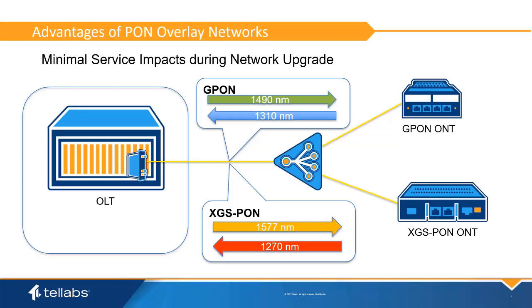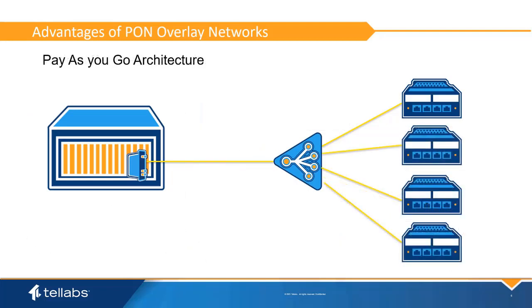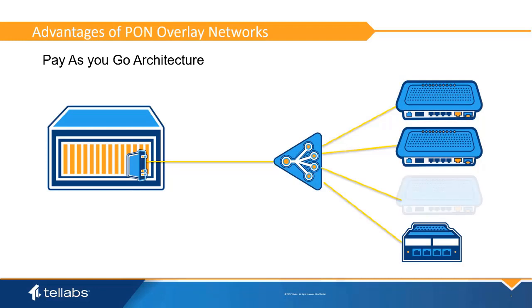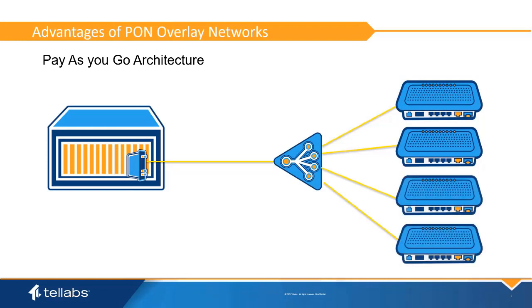Most upgrades can be performed with outages of a minute or less. Since the architecture supports multiple wavelengths on a fiber, this allows you to upgrade users as needed without service interruptions. One by one, upgrade individual users by changing out their ONT to one that supports the new wavelengths and higher speeds. Only users that need additional speeds are moved to the new, higher speed ONTs. All other users who have adequate bandwidth can continue to use the existing ONTs and infrastructure.